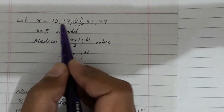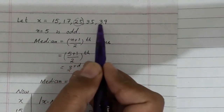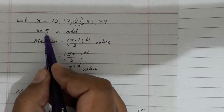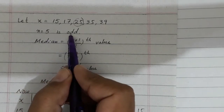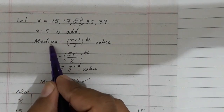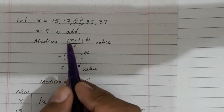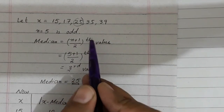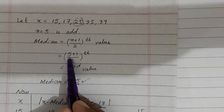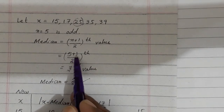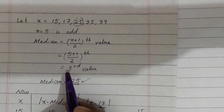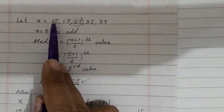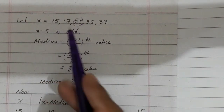Let x = 15, 17, 25, 35, 39. یہ ایک data set ہے، 5 observations ہیں اس میں۔ چونکہ 5 odd ہے، اس لیے median کا position n plus 1 divided by 2 سے calculate کریں گے۔ n کی جگہ 5 put کریں: 5 plus 1 divided by 2 = 3۔ تو third value data set میں median کا position ہے، یعنی first, second اور third — تو یہ 25 median ہے۔